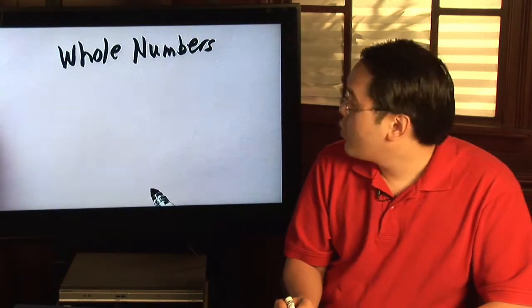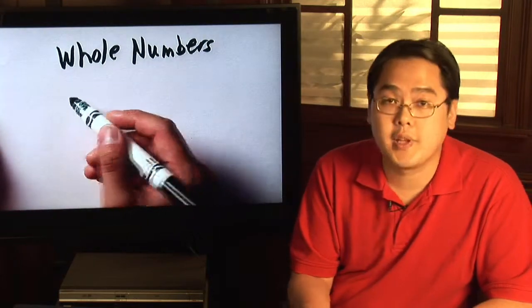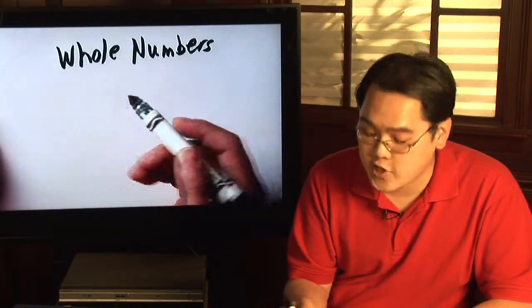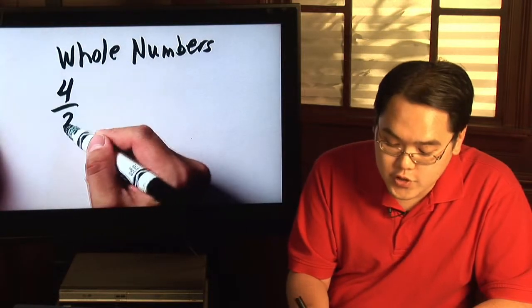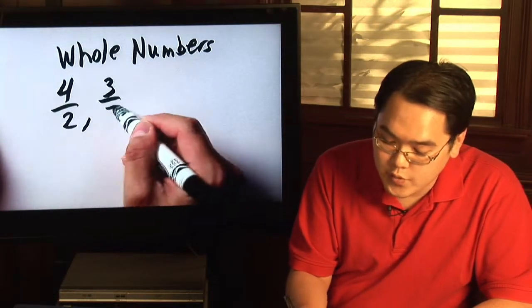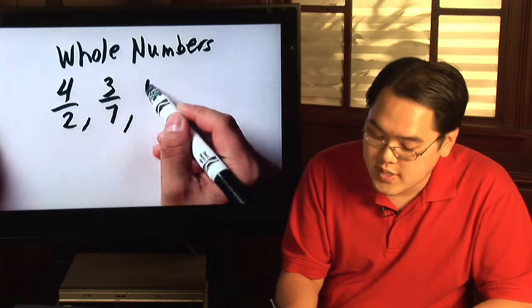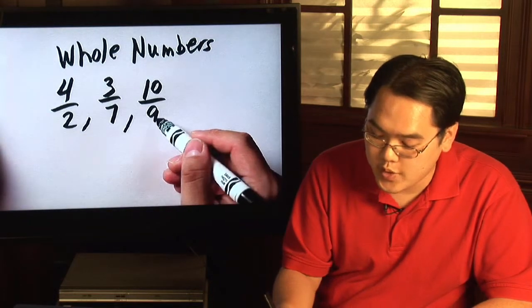Now, what you can do first is explain that any two numbers can be written as a fraction, whether it be four over two, three over seven, ten over nine, so on and so forth.